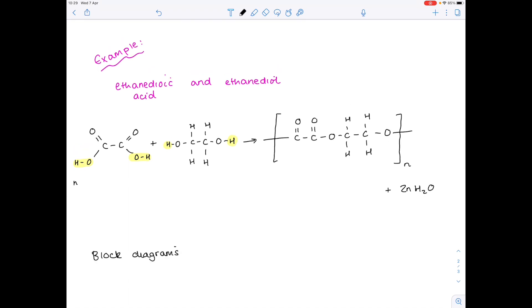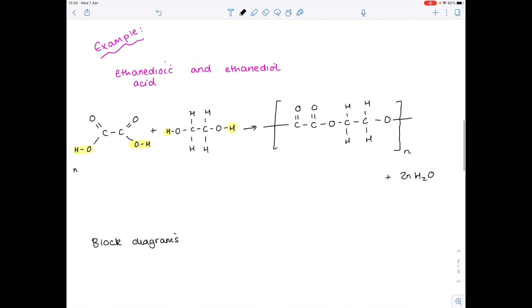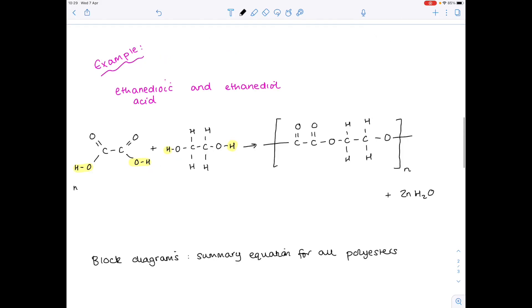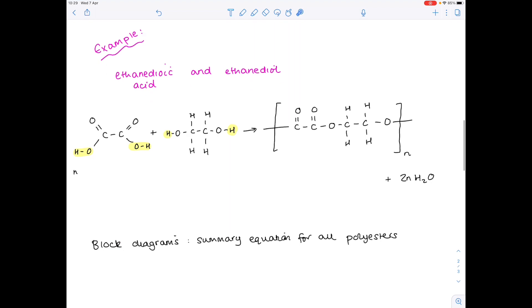Whereas before we were looking at a very specific example between ethanedioic acid and ethanediol, I'm going to show you how we can actually do a summary equation that works for all polyesters. Now if we look more closely, we know we always need the functional groups that we see here. However, the number of carbons in the middle of the molecule can vary. And that's where the block diagram comes in. Because we use a block to represent any number of these central carbon atoms.